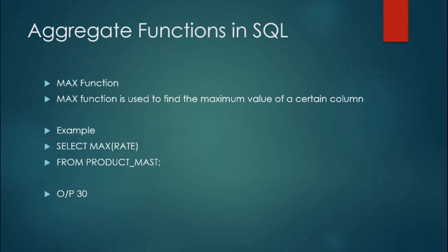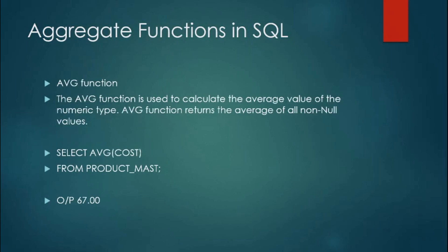Third is the AVERAGE function. What it exactly does is calculate the average value of a numeric type column. It calculates the average of non-null values in that column. You can see here that it will calculate the average cost from the product_masked table, and in the output it has fetched 67 rupees as the average cost of all products present in the table.